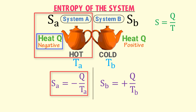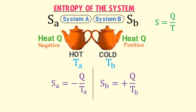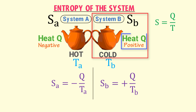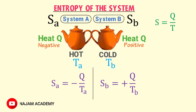At system level, if an object loses heat Q, its entropy S is negative. Secondly, if an object gains heat Q, its entropy S increases and is positive. Note these important points.